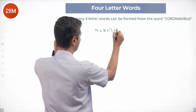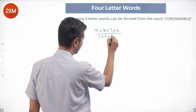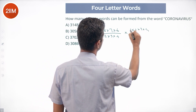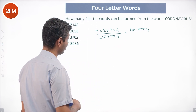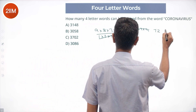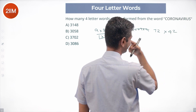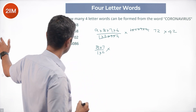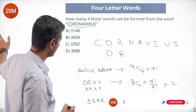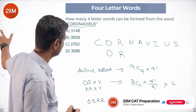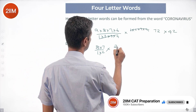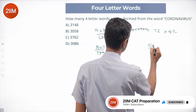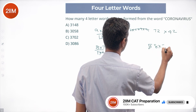Now computing: 9C4 × 4! = (9×8×7×6)/(1×2×3×4) × 24. That simplifies to 126 × 24 = 3024. For 8C2 × (4!/2!) × 2: 8C2 = 28, and 4!/2! = 12, so 28 × 12 × 2 = 672. Keeping it as 8×7×12 = 672.